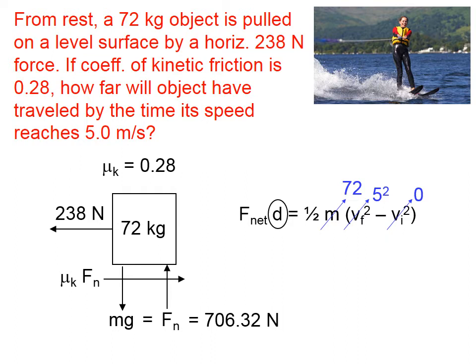The friction force is going to oppose the motion of the object, and since we know the coefficient of kinetic friction, and we just figured out the normal force, we should be able to figure out the magnitude of that friction force. The coefficient of kinetic friction is right up here, 0.28 times the normal force of 706.32, gives us this number, 197.77 newtons.